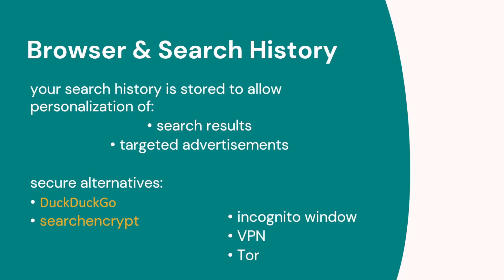Did you know that when you use your computer to search on the internet, that's recorded and stored? Some browsers even record what you're typing without you pressing return or enter. Why does it do that? Well, your search history is used to know what type of search results you want. For example, if I type 'Python,' I'm probably looking for the computer program rather than the snake. Another reason is again to target adverts. You may think that this is really against your privacy.